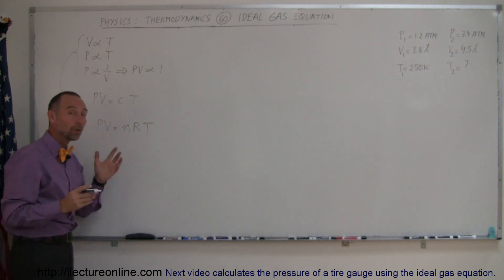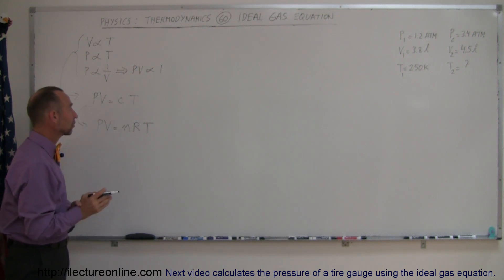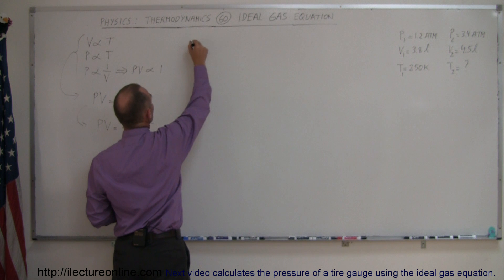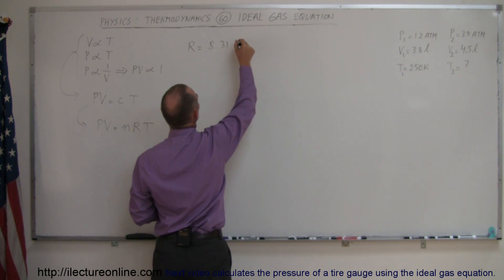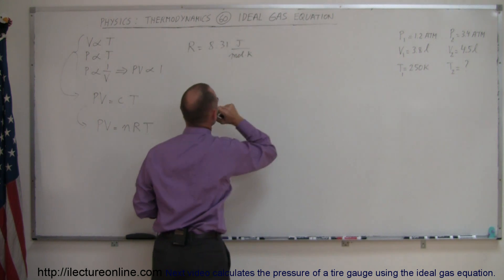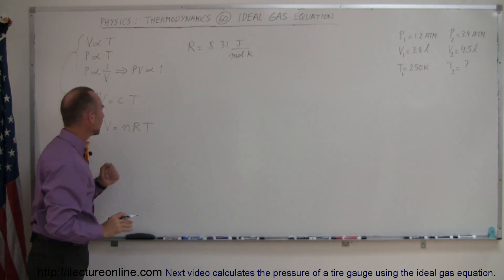So this equation then turns into something we call PV equals nRT, n being the number of moles in the sample and R being the gas constant. R is equal to 8.31 joules per mole per Kelvin. So that's our constant that we'll be using in the equation.